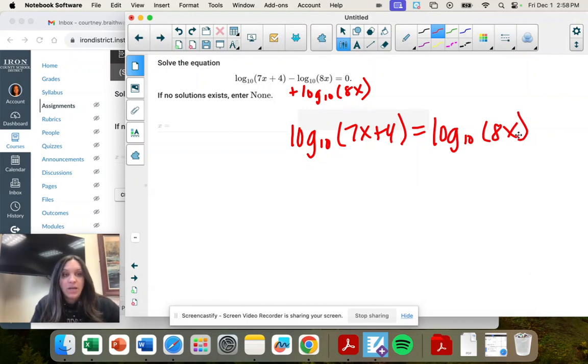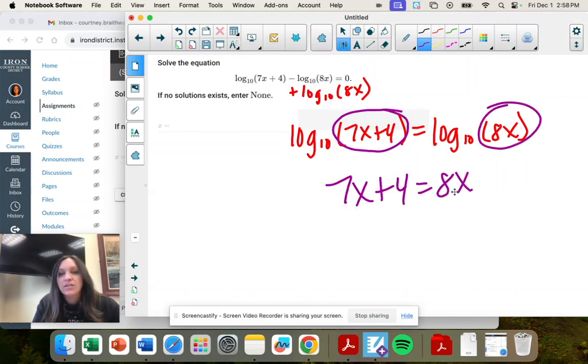And there we are. Now is where we need to be. We have one log base 10 equal to another. Now I can just take the arguments, 7x plus 4 equals 8x, and just solve for x.